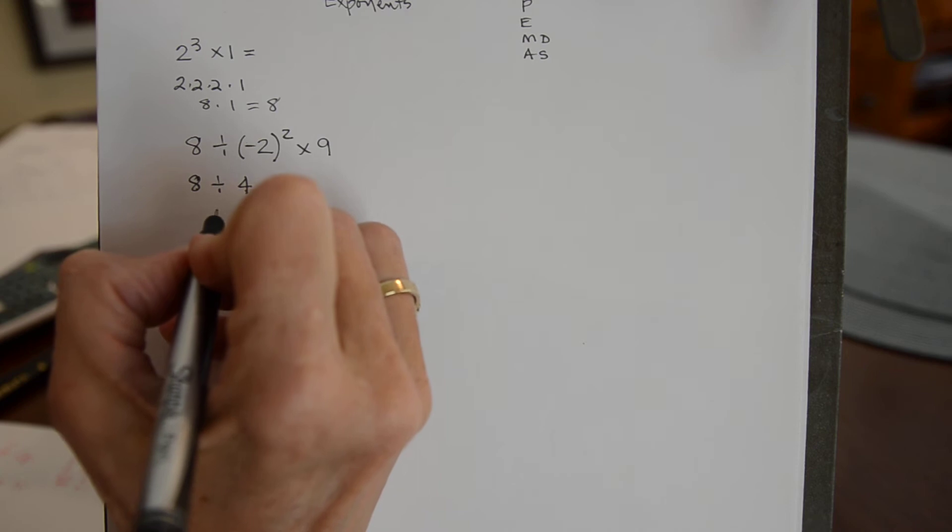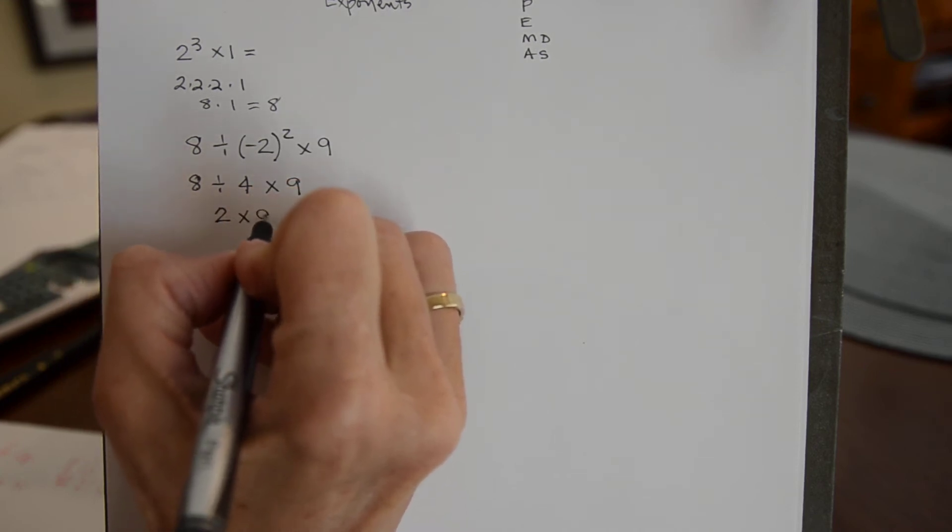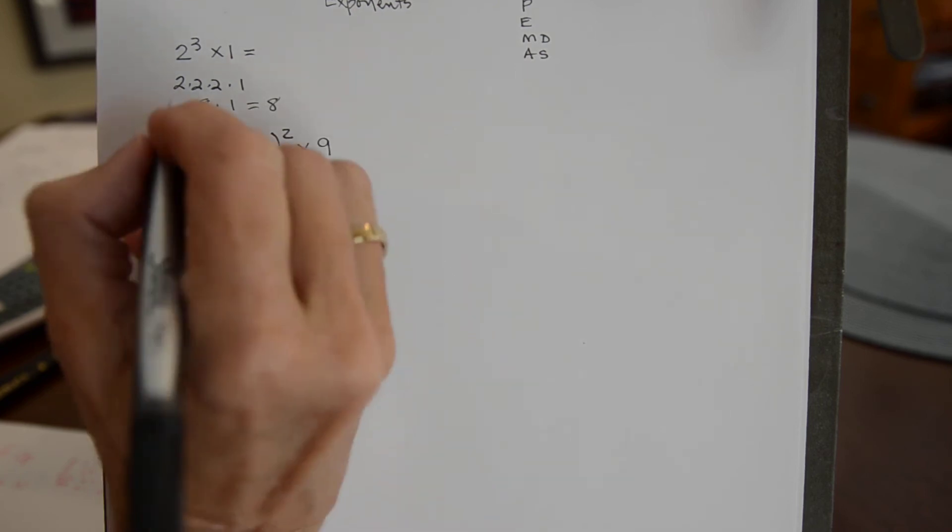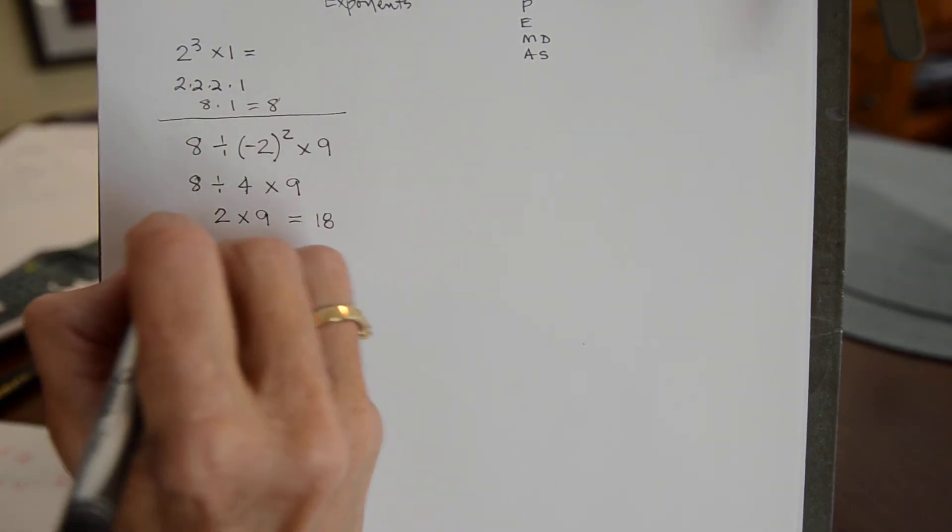So 8 divided by 4 is going to give me a 2. Then I can do 2 times 9 which will give me 18.